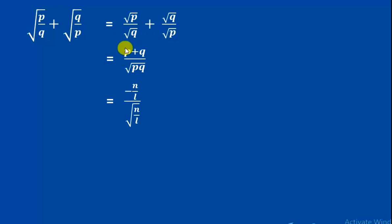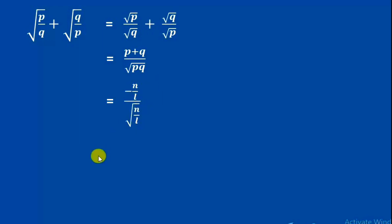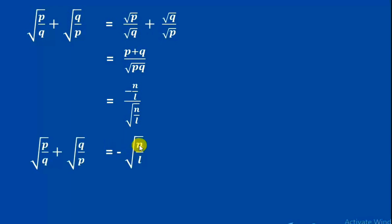We already know the sum of roots p + q = -n/l, and the square root of the product of roots √(pq) = √(n/l). So substituting, we get (-n/l) divided by √(n/l). Since n/l = √(n/l) × √(n/l), the √(n/l) cancels, and the remaining value is -√(n/l).